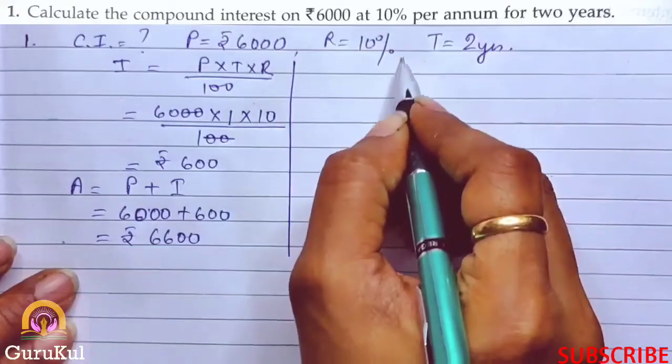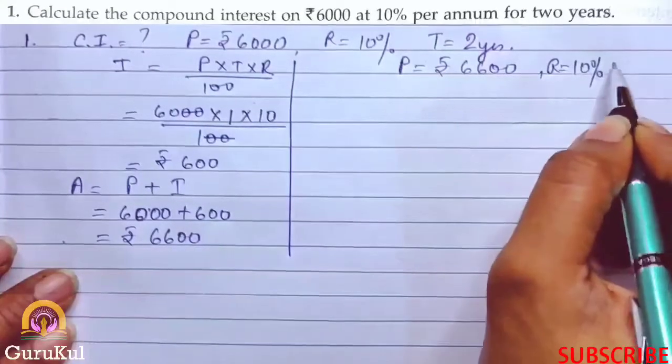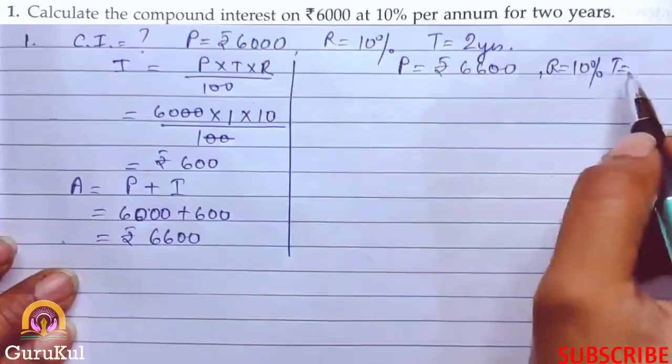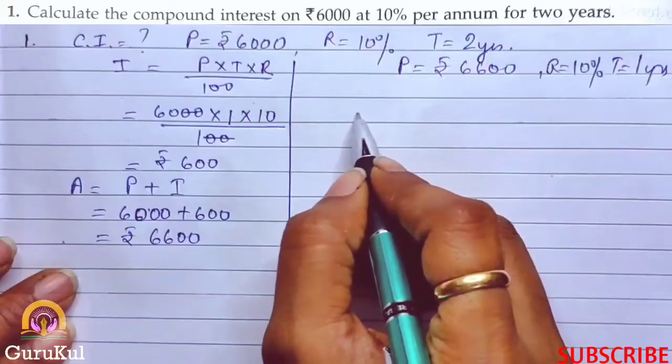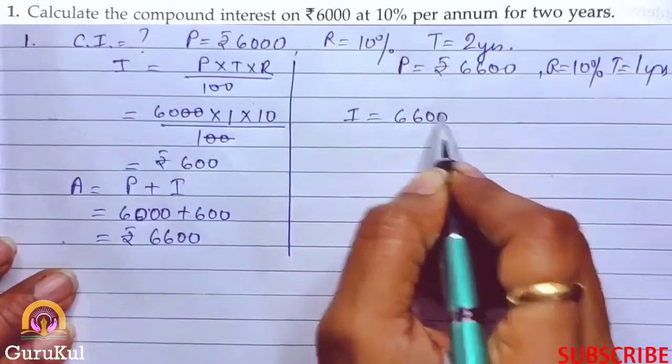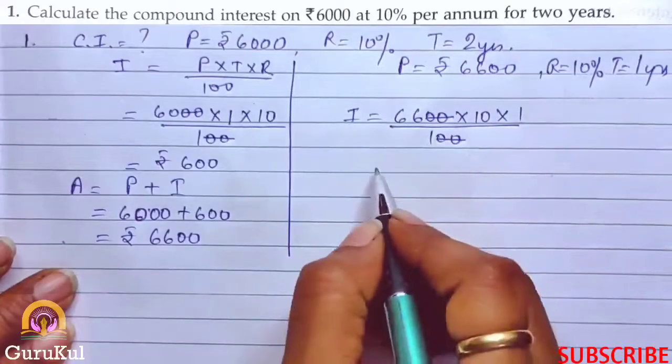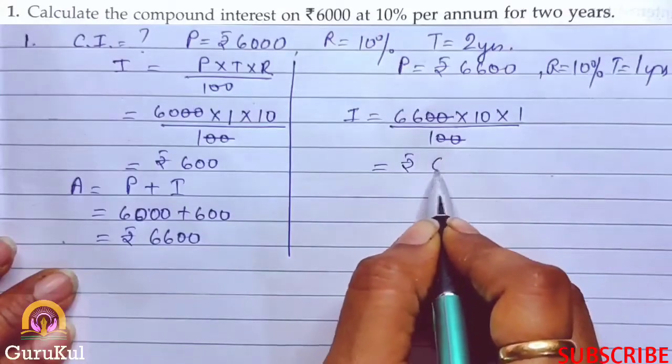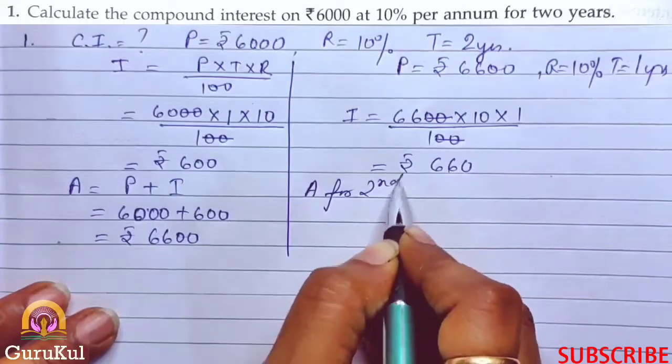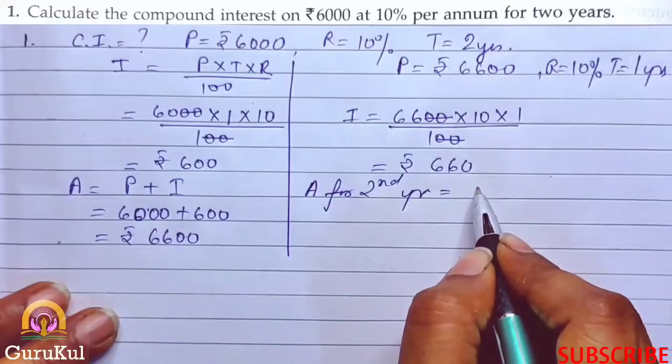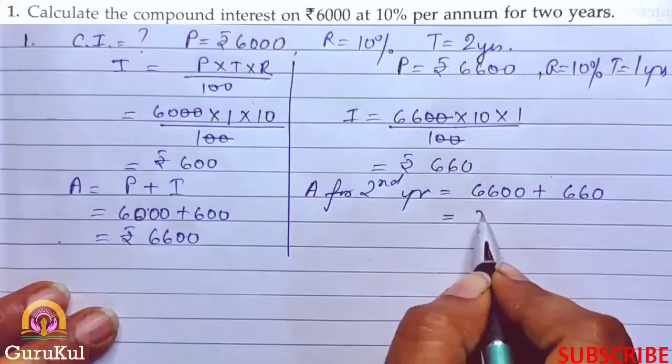Now in the case of compound interest, this amount becomes the principle for the next year. So now our principle is ₹6600, rate remains 10%, and time is 1 year since we calculated one year already. The process is the same: interest equals 6600 into 10 into 1 by 100. Equal number of zeros cancelled, so our interest is ₹660.